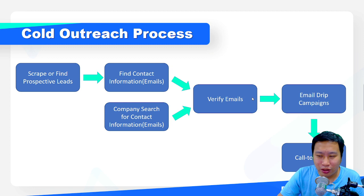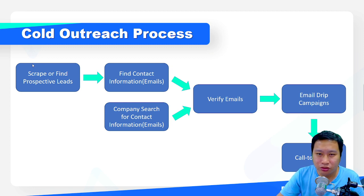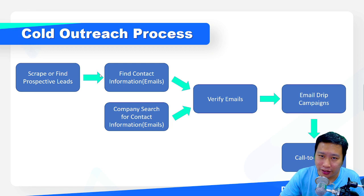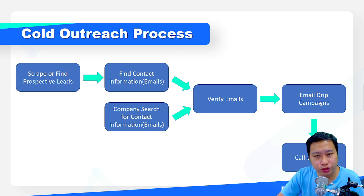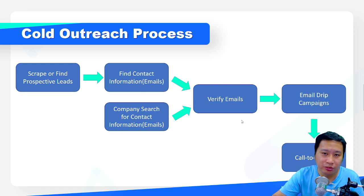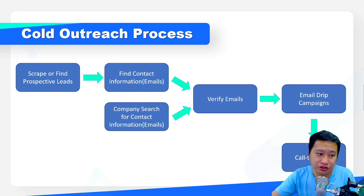Before we get started, make sure that you understand the cold outreach process. The first step is to scrape and find prospective leads. Then we want to find the domain names — the URLs of their websites — so that we can find their emails, verify those emails, and then send drip campaigns to get them to take action. That would be the process of the cold outreach.